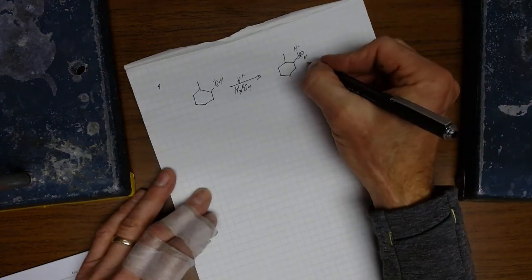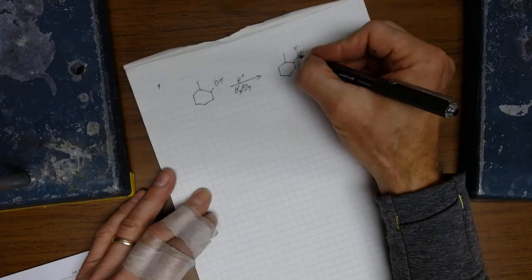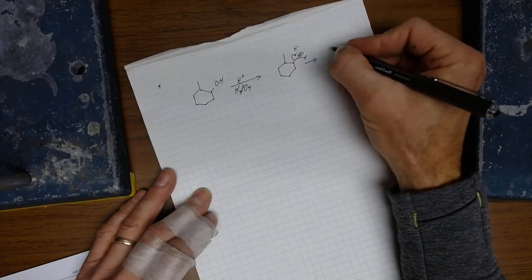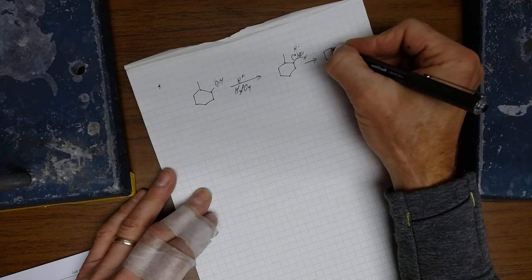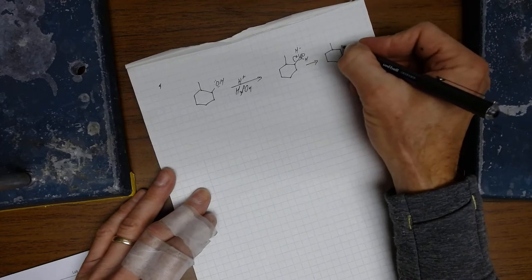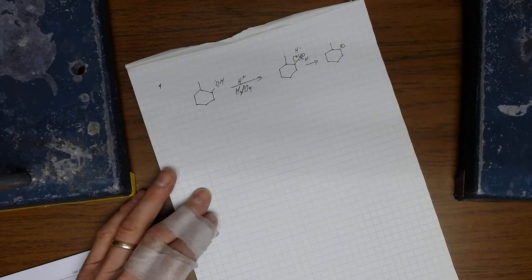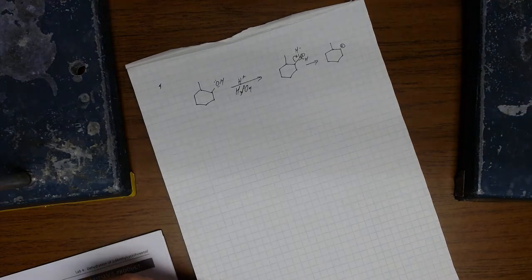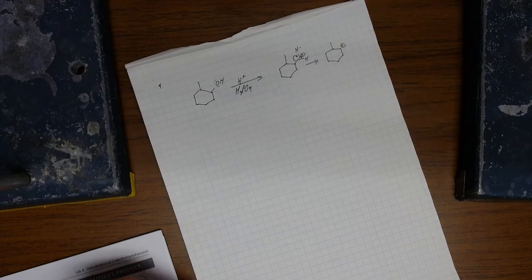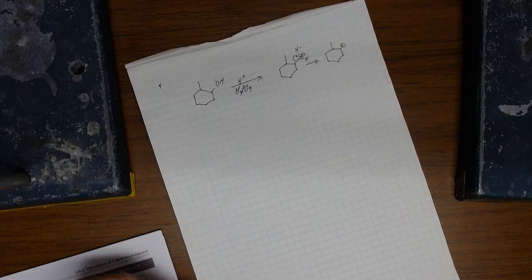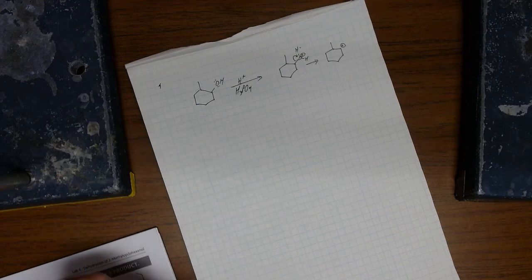This will then have the electrons jump with the water, and behind will be left a carbocation. Now, one thing that carbocations are very good at doing is rearranging. They rearrange to typically form more stable carbocations. Not always, or they can rearrange to make equally stable carbocations. They very rarely make less stable carbocations.